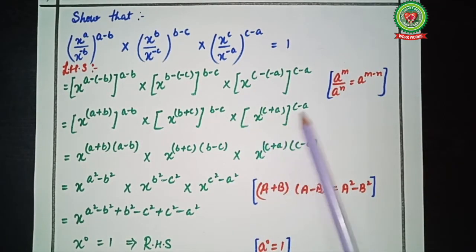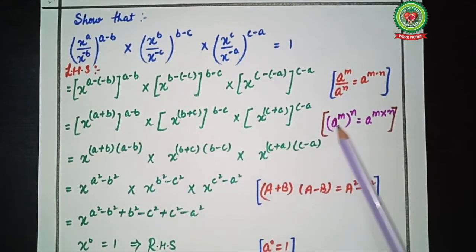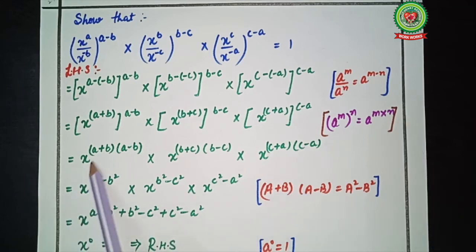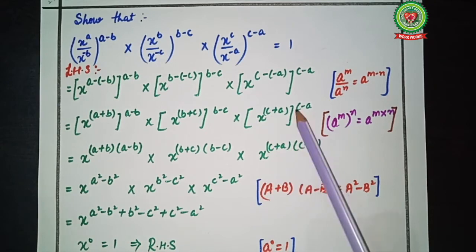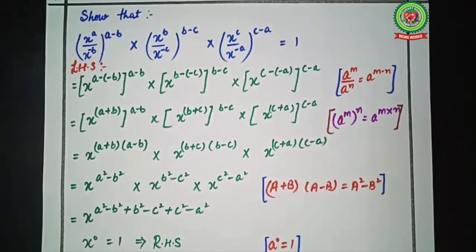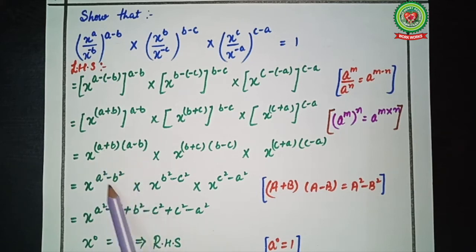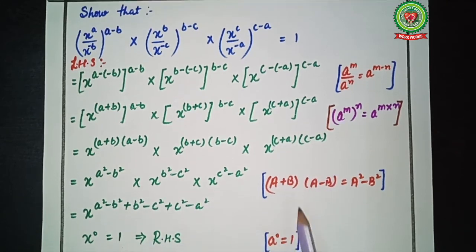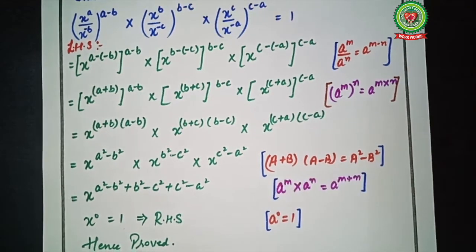Now we apply the rule a raised to power m bracket n equals a raised to power m multiplied by n. So we write x raised to the a plus b into a minus b, multiplied by x raised to the b plus c into b minus c, multiplied by x raised to c plus a into c minus a. Here we recognize the identity a plus b into a minus b equals a squared minus b squared. So we write x raised to power a squared minus b squared, multiplied by x raised to power b squared minus c squared, multiplied by x raised to power c squared minus a squared.